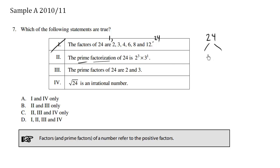24 is the same thing as 6 times 4, which is the same thing as 2 times 3. And 4 can be broken down to its factors 2 times 2.